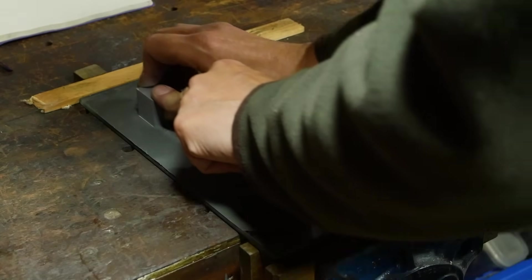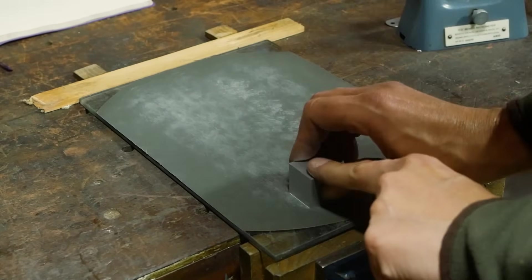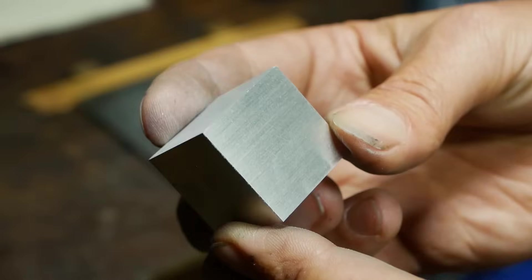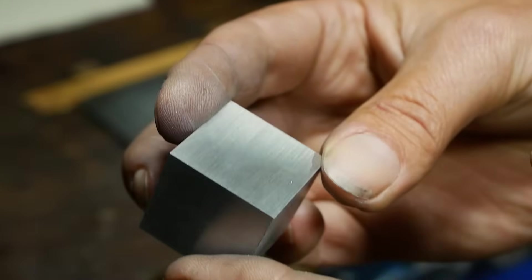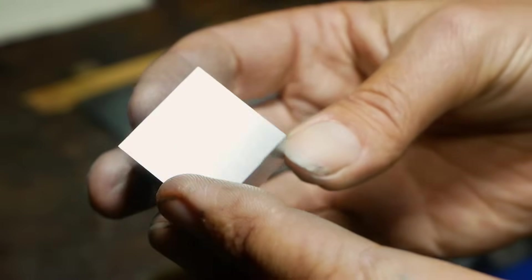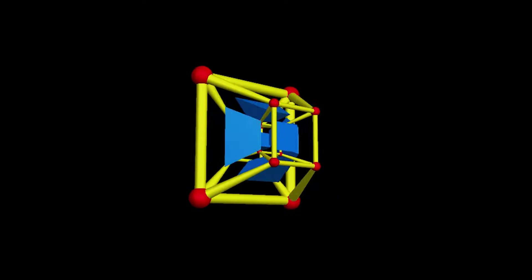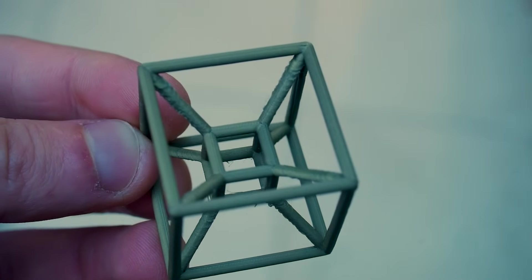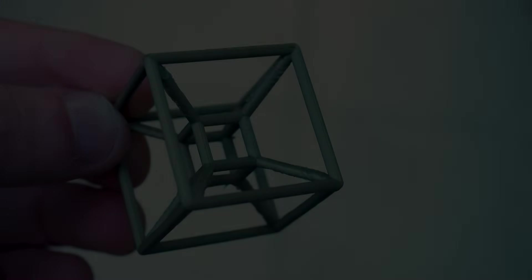The 4D relative of a cube is the 8-cell, or tesseract. Sci-fi fans will no doubt recognize the name from series like Doctor Who and the Marvel Universe. A tesseract is what you would get if you took a 3D net of cubes and folded it into 4D space, the same way that we fold a 2D net of squares into a cube.